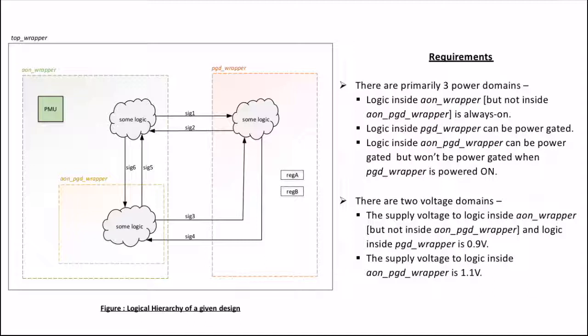First, let us look into the logical hierarchy and the power intent of the design. We have a top level wrapper built on top of an AON wrapper and a PGD wrapper. This PGD wrapper has some logic and two registers. I have not shown the inputs and outputs to these registers for simplicity. Similarly, the AON wrapper has some logic and a power management unit or PMU that drives the power related control signals. This wrapper also has one more wrapper below its hierarchy called the AON PGD wrapper, which again has some logic inside it. As you can see, there are signals coming to and fro in different logic blocks.